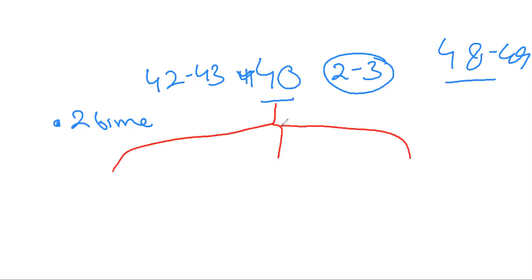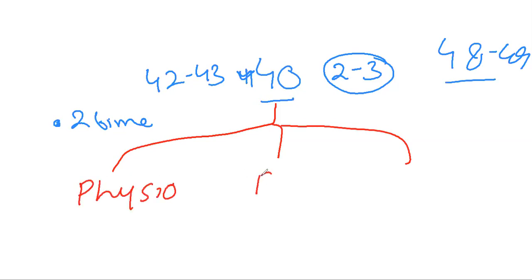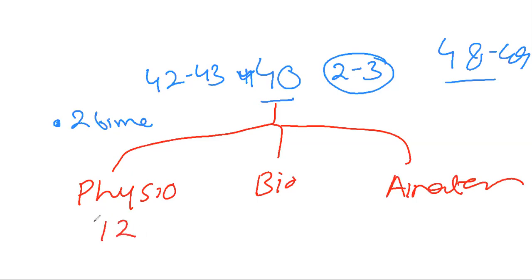So you have 3 subjects: Physio, BioChem and Anatomy. For example, if you are making a 40-day schedule, I am giving a vague idea — you have to adjust your weak areas according to your needs. So for 12 days each.